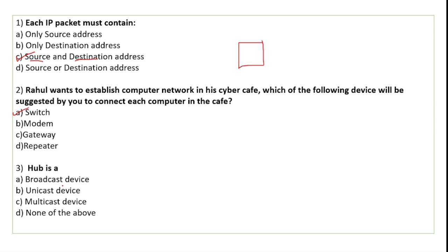Hub is a connecting device which is used to create a LAN network. Hub is a broadcast device — whatever message comes in, it sends the same message to every computer attached to it. This is why hub is called a broadcast device.